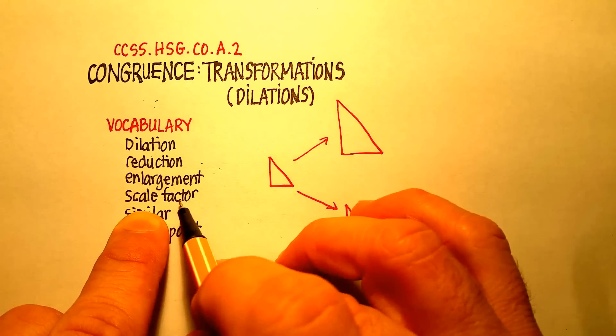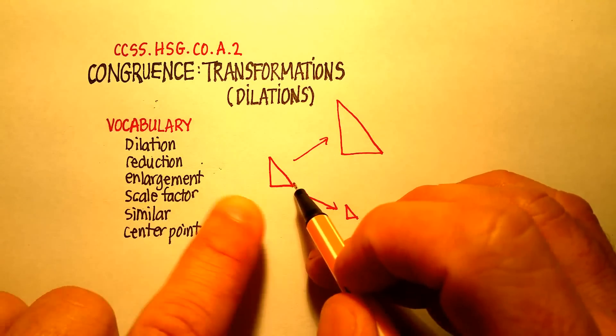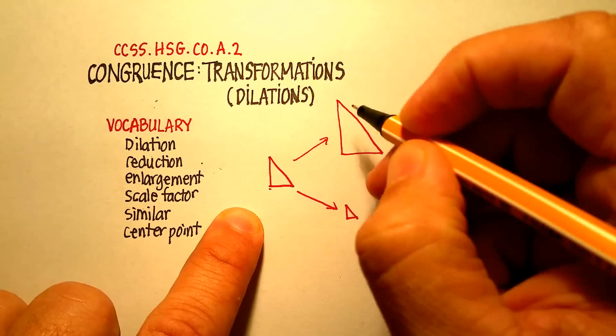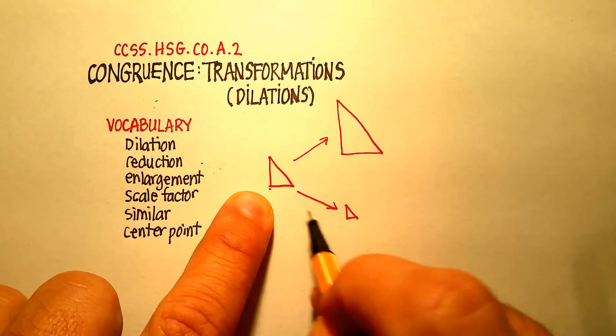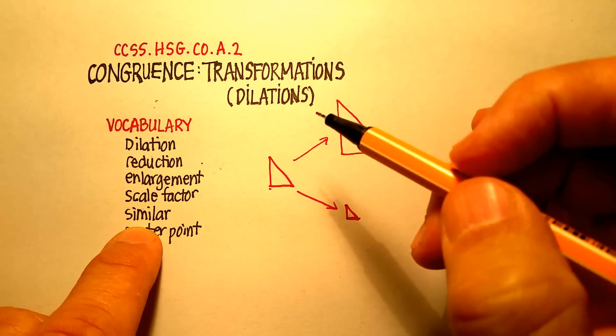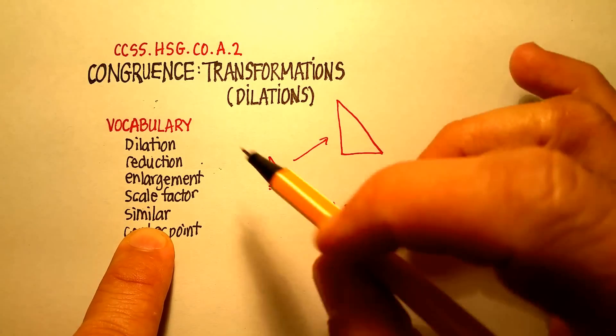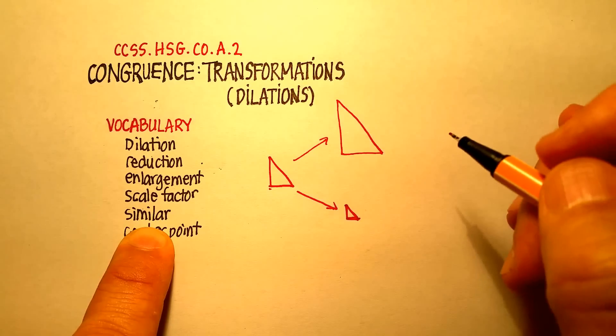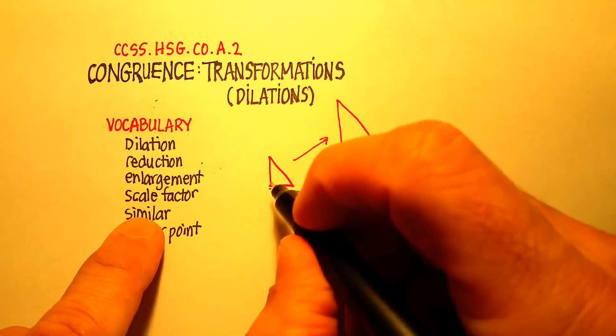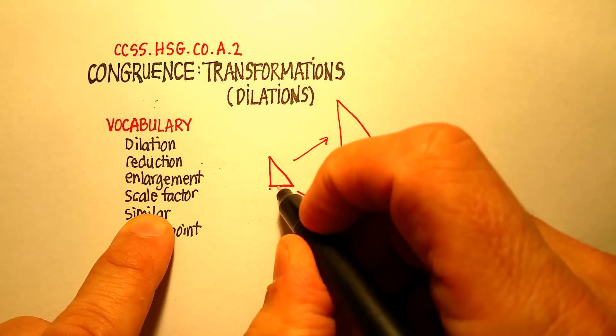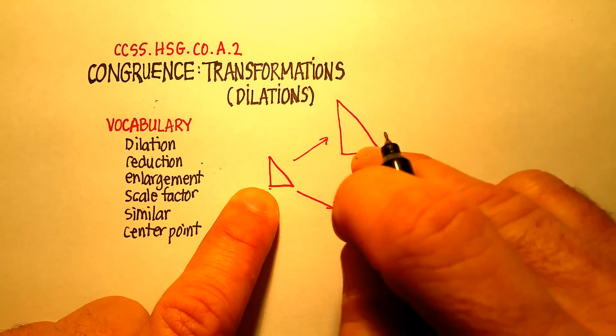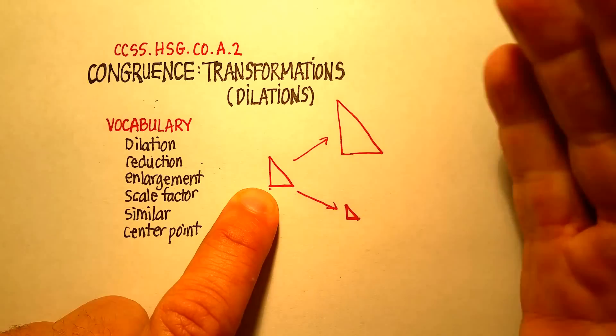So what is a scale factor? The scale factor is the amount that you multiply each one of these vertices by to get your larger size or to get your smaller size or your reduced size. Now you'll notice, I use the word similar in here. A dilation has some very particular characteristic, and that is that the proportions of the original pre-image remain the same. So the proportions from the pre-image to the image must remain the same, which means that they are similar.